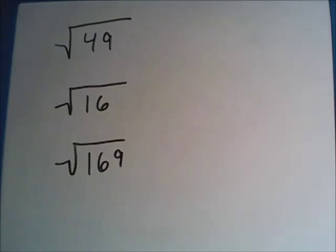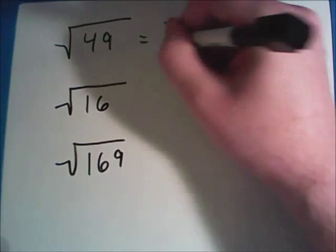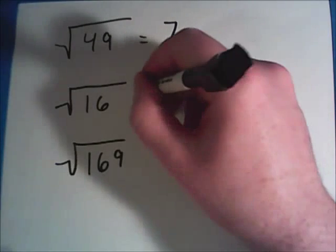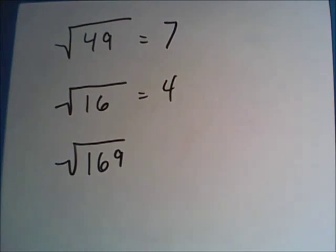Here are three more for you to practice with. Pause the video if you need more time. The top one is asking for the square root of 49. So what number times itself equals 49? Well, this one's going to be seven. The second one is the square root of 16, and four times four is 16, so its square root is four.